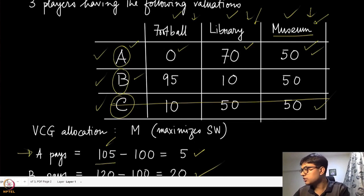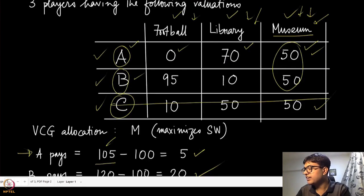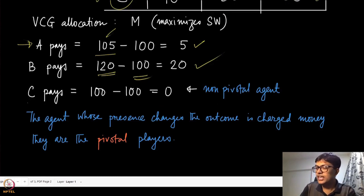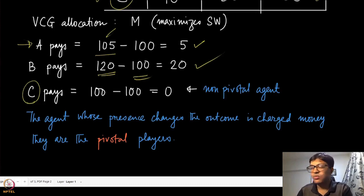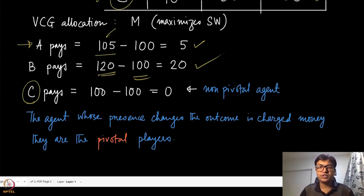For agent C, something interesting happens: when C is removed, the outcome does not change — the maximum for the other two players remains 100 from the museum. When C is present, the museum is still chosen and the sum of the other agents' values remains the same. So both terms in the VCG payment formula are equal and C pays zero. Agent C is a non-pivotal agent. A player is pivotal if their presence changes the outcome; since C's removal changes nothing, the mechanism charges C nothing — which is why it is called the pivotal mechanism.